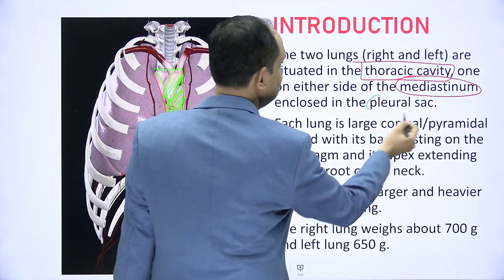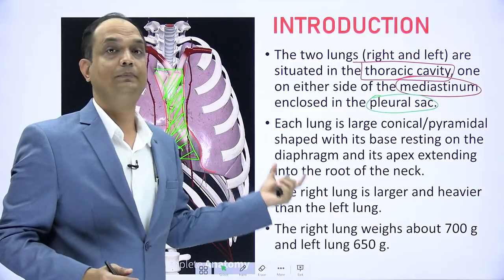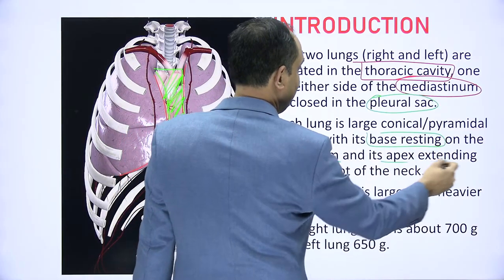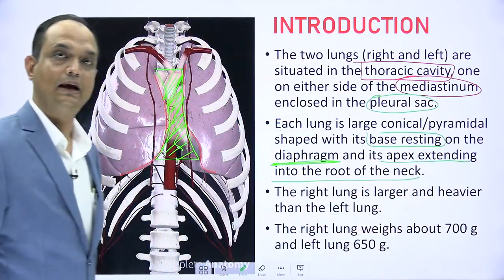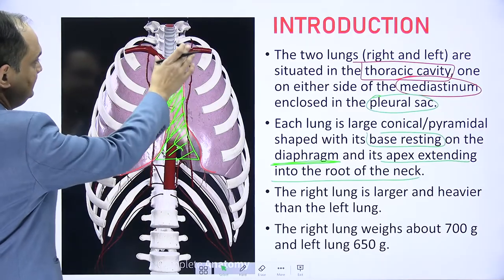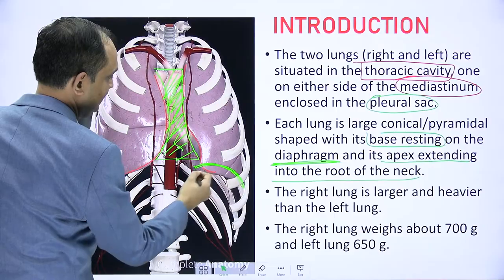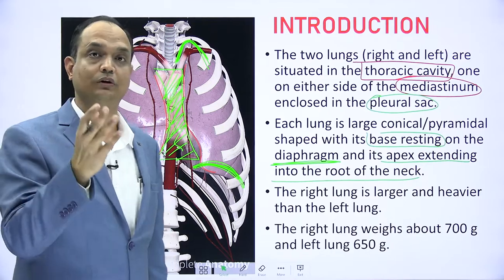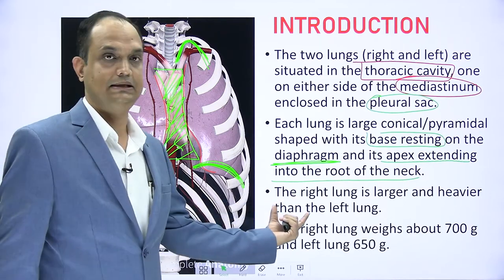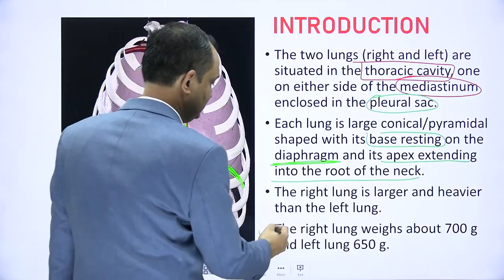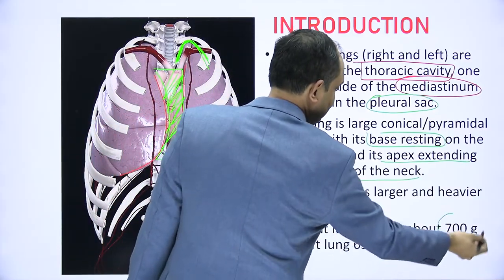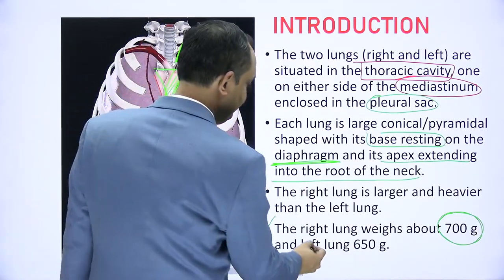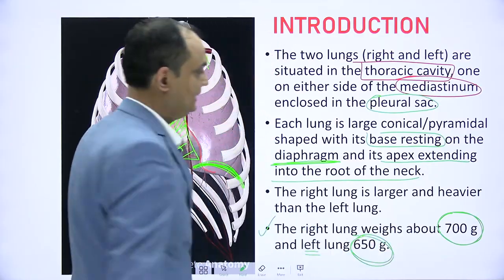Each lung is enclosed by the pleural sac. Each lung is a large conical or pyramidal-shaped organ, with its base resting on the diaphragm and the apex extending into the root of the neck. The right lung is larger and heavier at approximately 700 grams, while the left lung is around 650 grams.